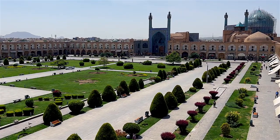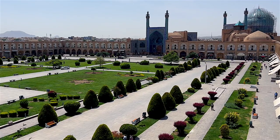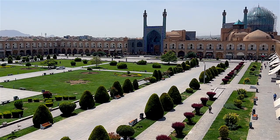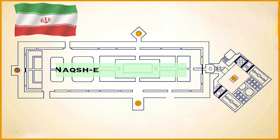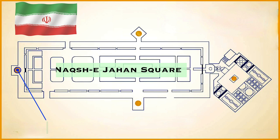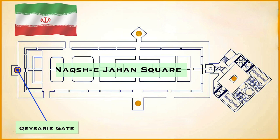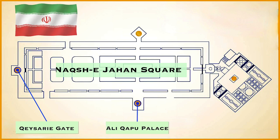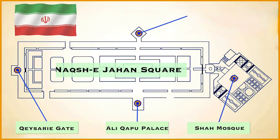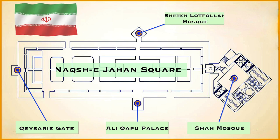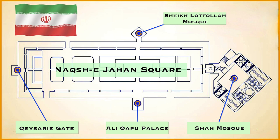Constructed in the 16th century, it is surrounded by buildings from the Safavid era. At the northern side, Qaisari Gate opens to Isfahan Grand Bazaar. On the western side is Ali Kapu Palace. The Shah Mosque is situated on the southern side, and Sheikh Lotfollah Mosque is situated on the eastern side of the square.